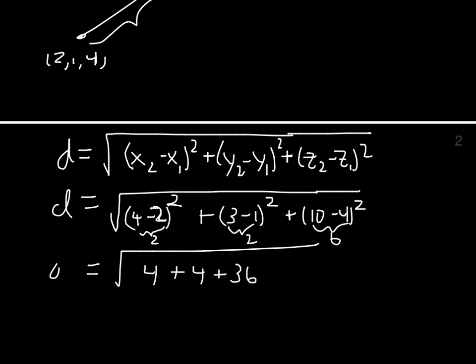So the distance between those points is the square root of 44. We can call it 2 times the square root of 11. The diameter is that.